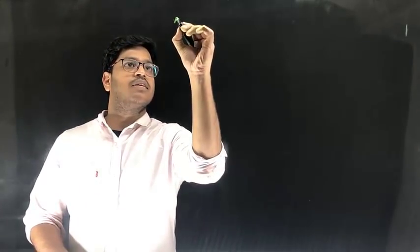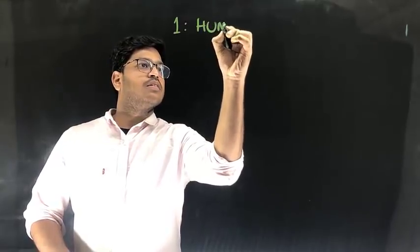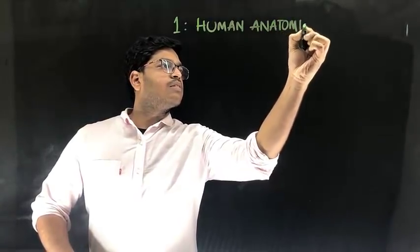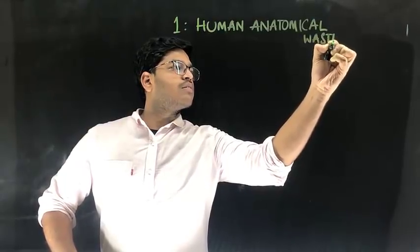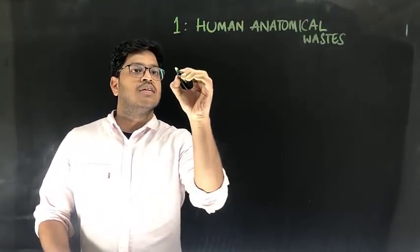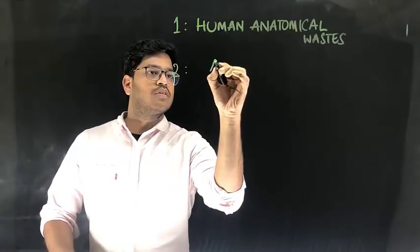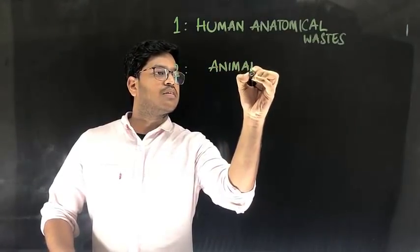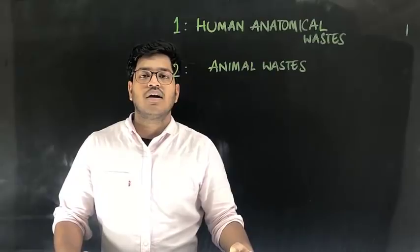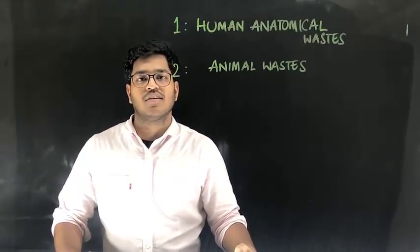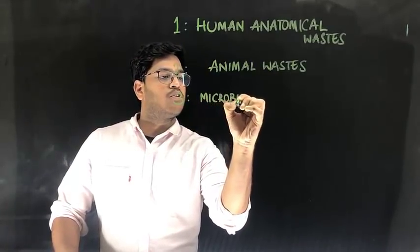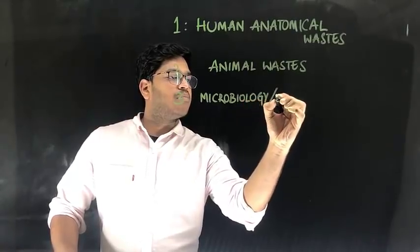Moving on to the categories, category 1 includes human anatomical waste. This includes human tissues, human organs and various body parts. Category 2 includes animal waste. Animal waste includes various animal tissues, animals used in research and various waste from veterinary hospitals and colleges.